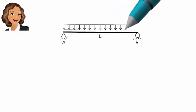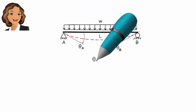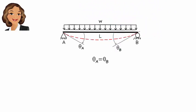Note that due to the symmetrical nature of the beam, theta A equals theta B. Therefore, we need to compute only one of them.